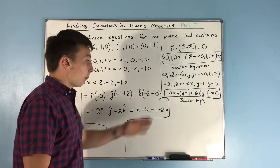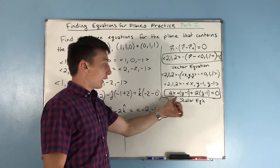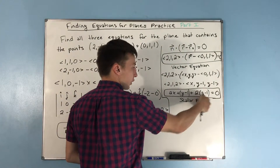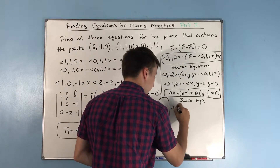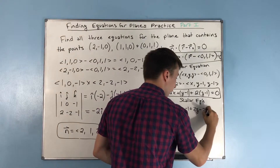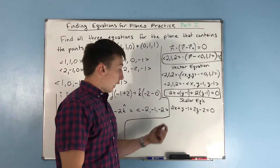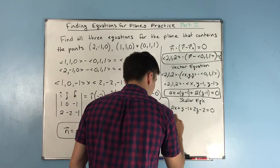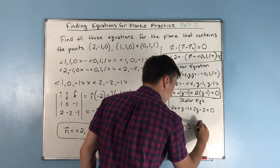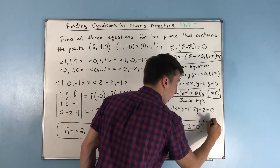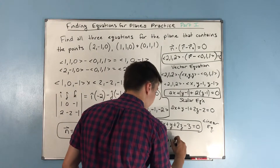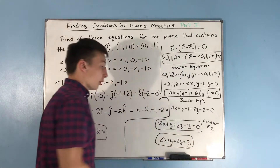Finally, we get the linear equation by distributing through: 2x + y - 1 + 2z - 2 = 0. Combining the constant terms gives 2x + y + 2z - 3 = 0. You may also see this written as 2x + y + 2z = 3, with the constant on the other side.